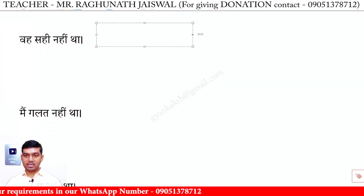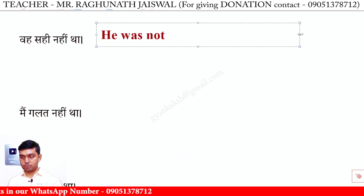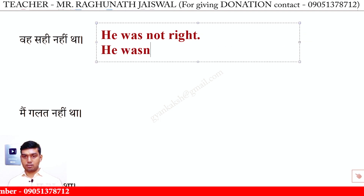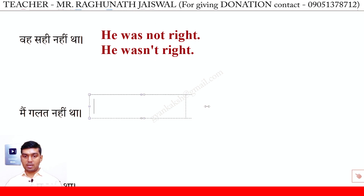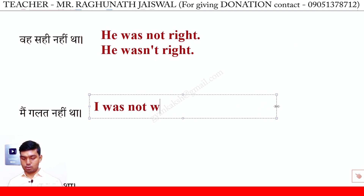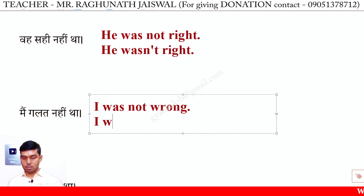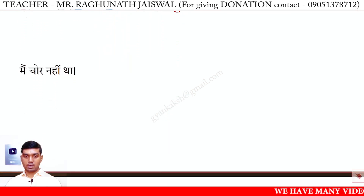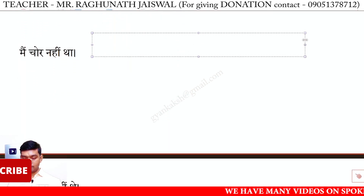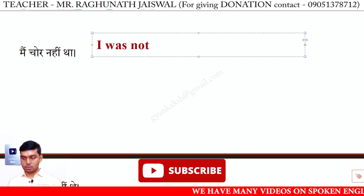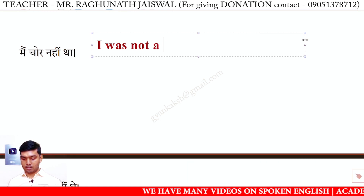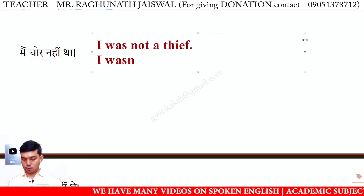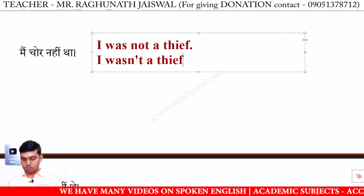Vah sahi nahi tha — He was not right. Short form: he wasn't right. Main galat nahi tha — I was not wrong. Short form: I wasn't wrong. Main chor nahi tha — I was not a thief. Short form: I wasn't a thief.